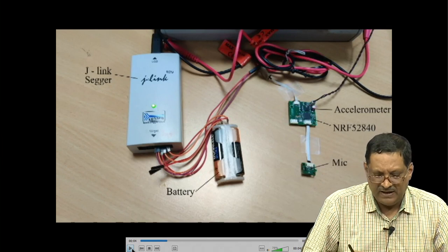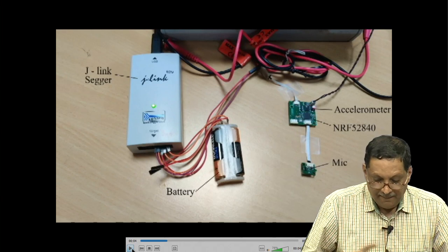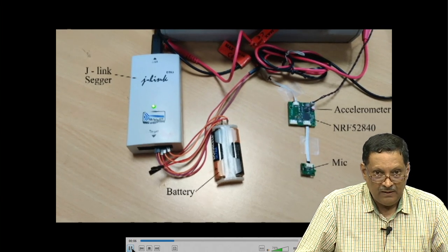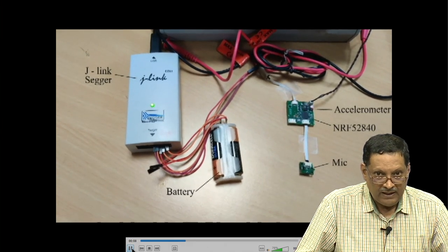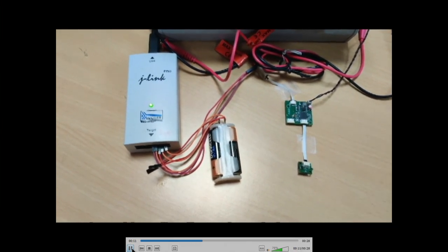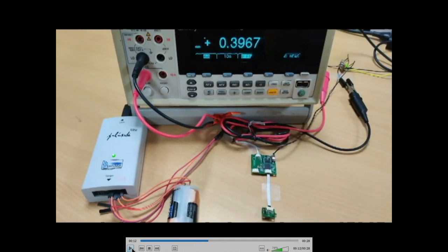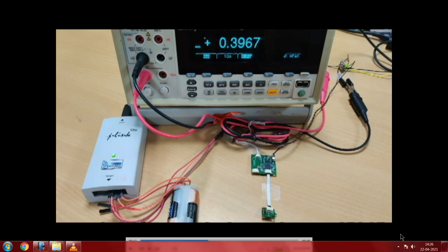Let us do it step by step with this simple example. Now let me play it — you will see a certain indication of the current consumption as we go along. You can see the value is shown as 0.39, or about 0.4 milliamperes of current. The controller appears to be in some sleep mode — I will be very careful here: it is in some sleep mode.